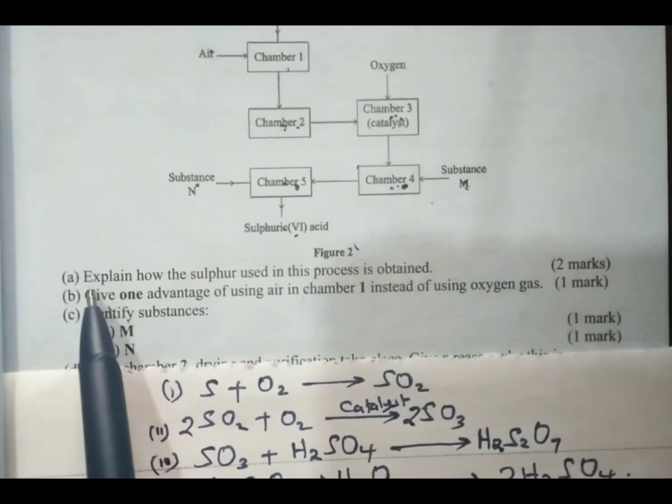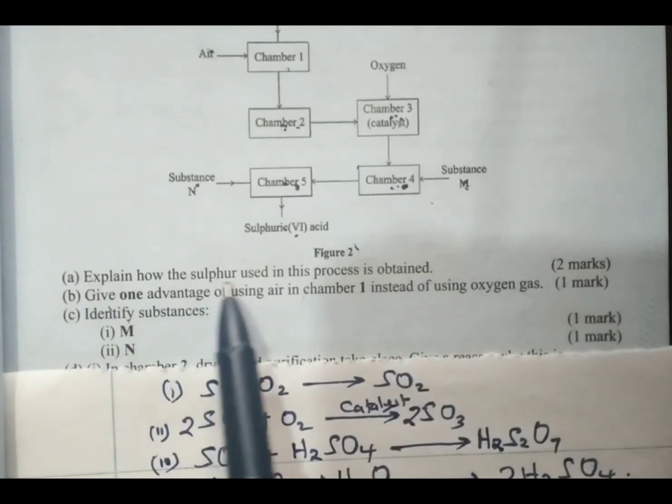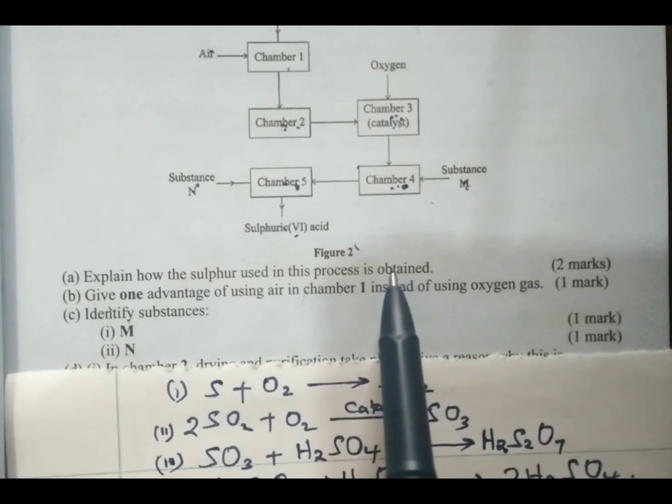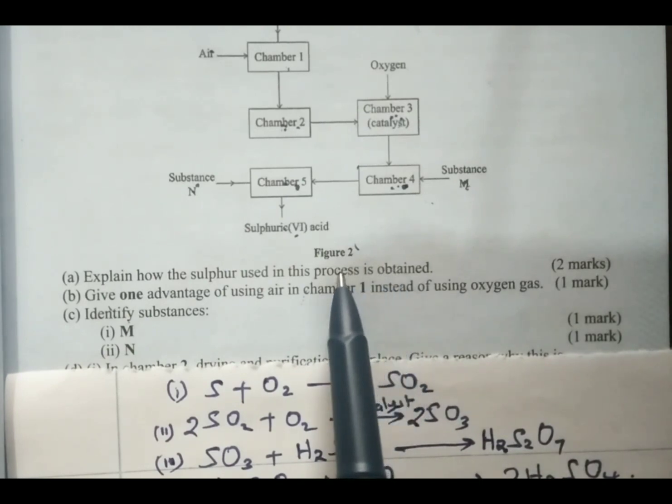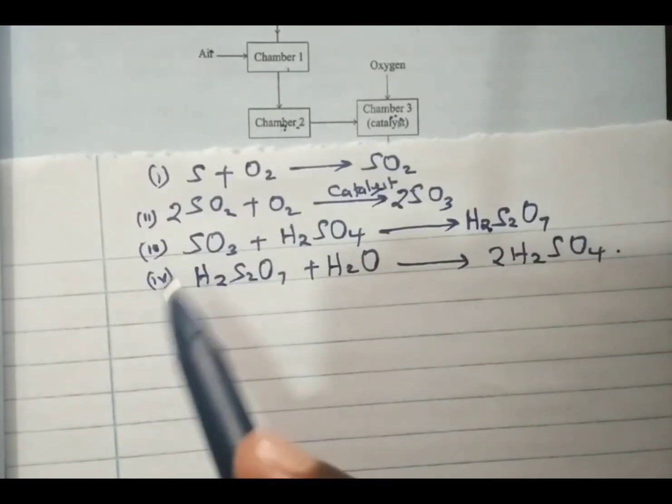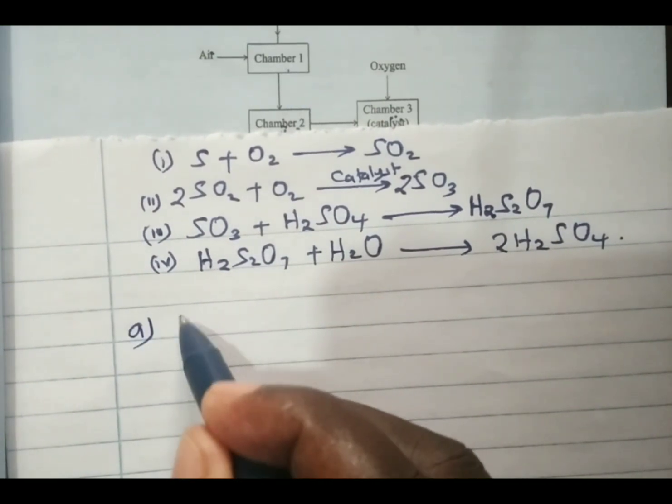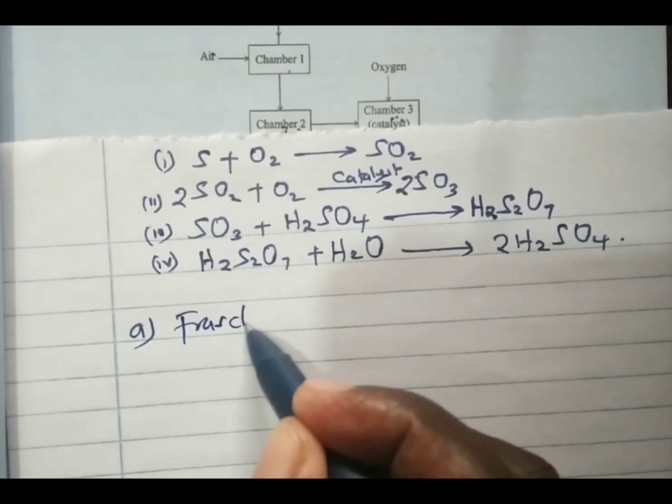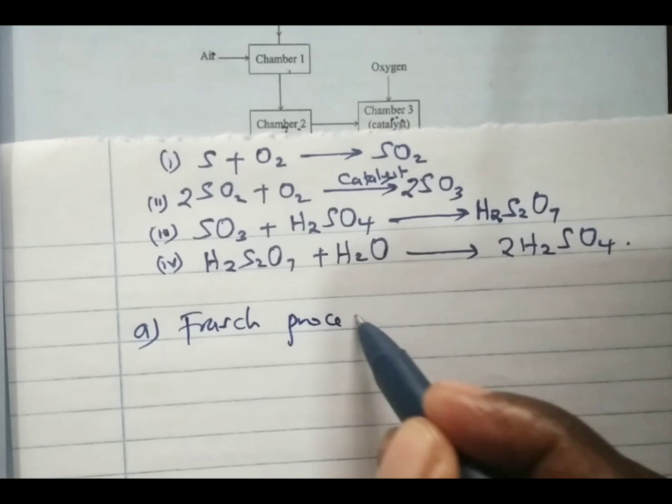Part A: Explain how the sulfur used in this process is obtained. Remember, sulfur is extracted using Frasch process. So it is obtained using Frasch process.